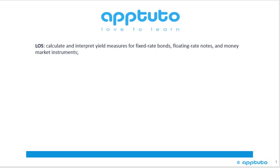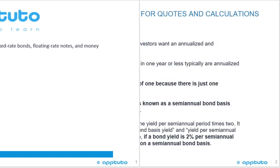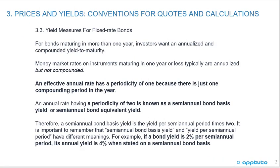This LOS is Calculate and Interpret Yield Measures for Fixed Rate Bonds, Floating Rate Notes, and Money Market Instruments. The topics covered are Prices and Yields, Conventions for Quotes and Calculations, and Yield Measures for Fixed Rate Bonds.